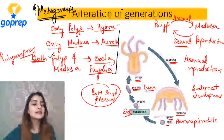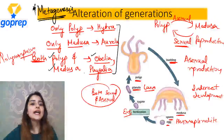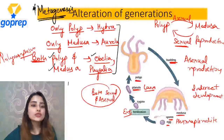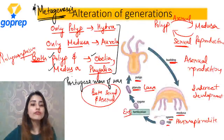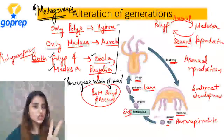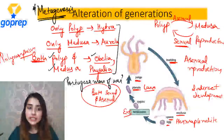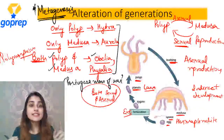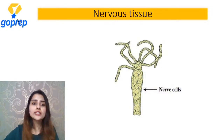Agar question aaye ki metagenesis inhein mein se kaun show karta hai - hydra, Aurelia, Obelia, Physalia - toh answer kya hoga? Obelia and Physalia. Kyunki metagenesis mein generation change karni padegi - wahi show karega jo polyp form mein bhi exist karta hai aur medusa mein bhi. Hydra and Aurelia nahi karte, aur Obelia aur Physalia karte hain - they show metagenesis. Physalia is also called as Portuguese Man of War.